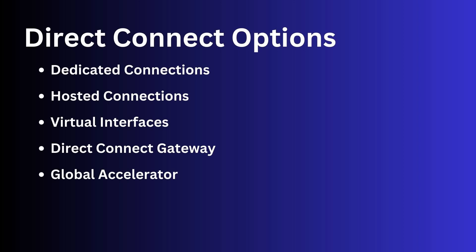AWS Direct Connect offers several options for connecting to the AWS cloud. Dedicated connections: a dedicated connection is a physical Ethernet connection between your on-premises data center and an AWS Direct Connect location. You can choose from several speeds ranging from 1 gigabit per second to 100 gigabits per second, depending on your needs.